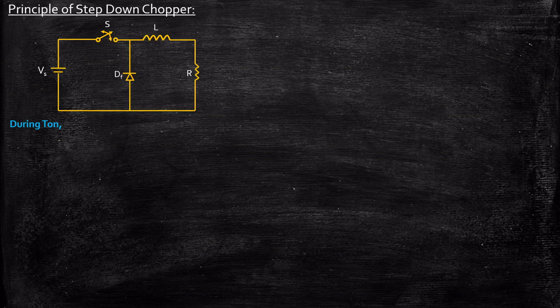In case of a rectifier circuit, we saw what happens during positive and negative half cycle. For circuit operation here, we will be considering what happens during turn on and what happens during turn off.